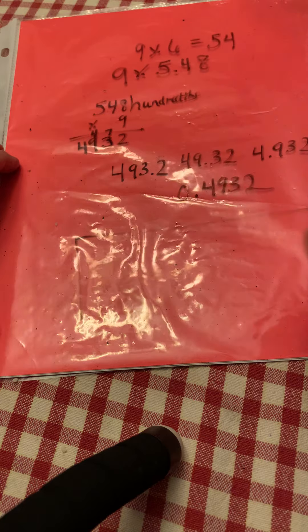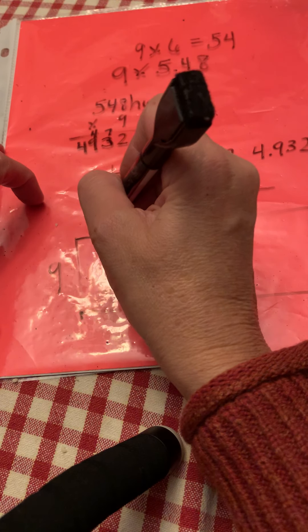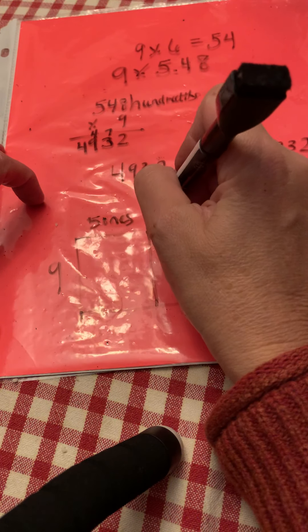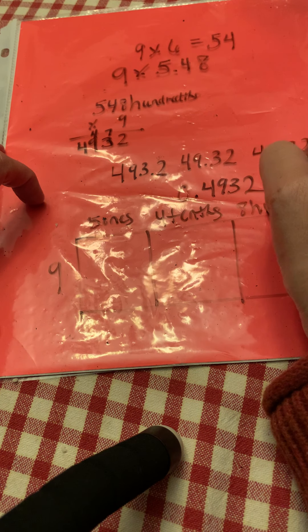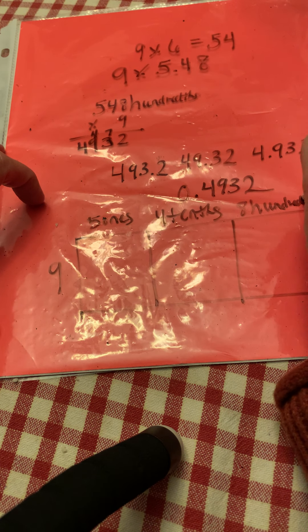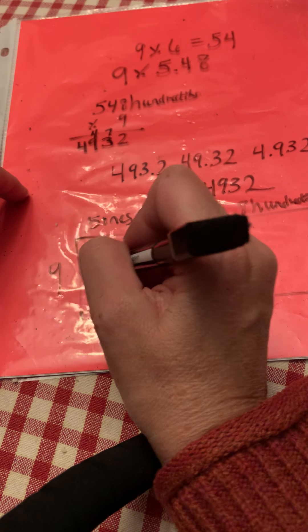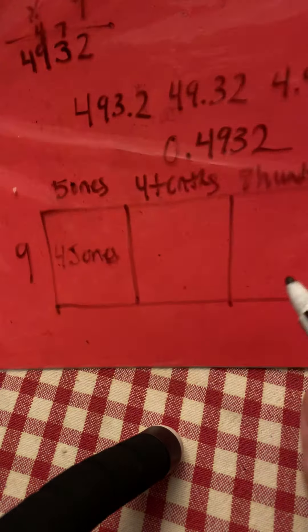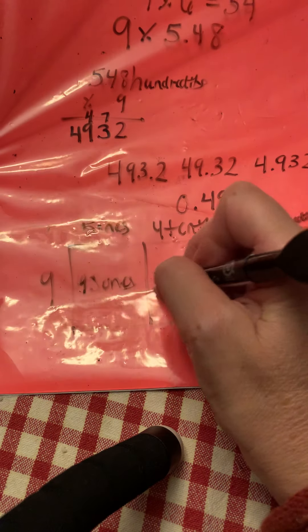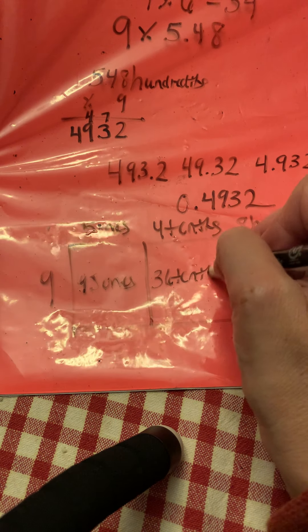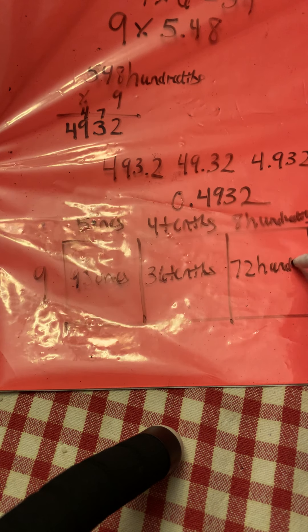So then you might want to draw your area model. Nine copies of five ones, nine copies of four tenths, nine copies of eight hundredths. Then you solve. Nine times five is 45 ones. Can I see that? It's kind of running out my pen. Nine times four tenths is 36 tenths. Nine times eight hundredths is 72 hundredths.